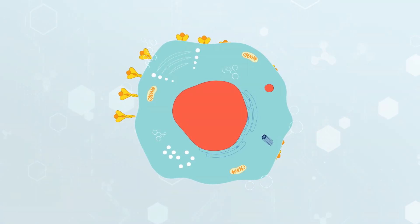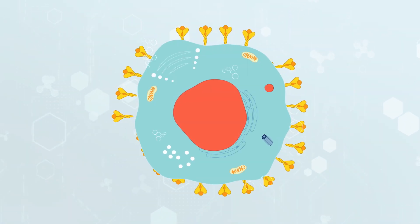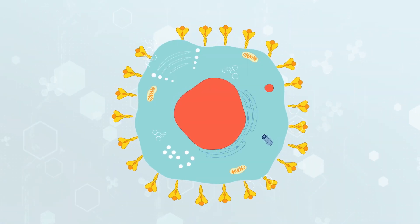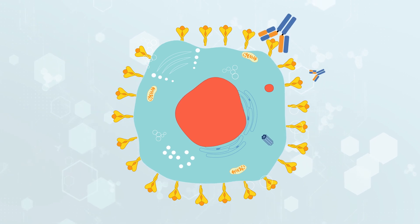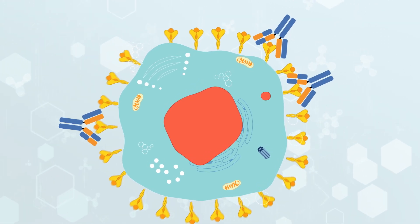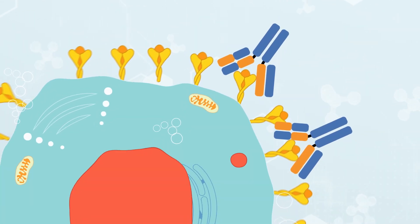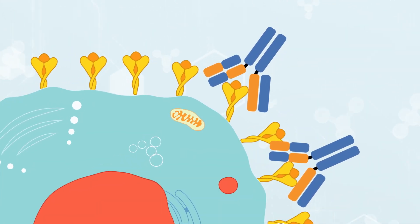Infection of cells by a virus causes the spike protein to be expressed on the surface of cells. This spike protein is recognised by the immune system.